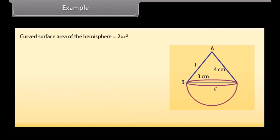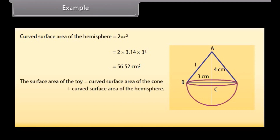The curved surface area of the hemisphere = 2πR² = 2 × 3.14 × 9 = 56.52 cm². Hence, the surface area of the toy equals curved surface area of the cone plus curved surface area of the hemisphere = 47.1 + 56.52 = 103.62 cm².